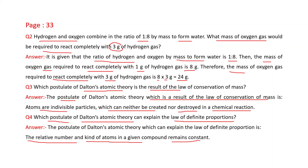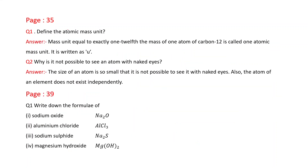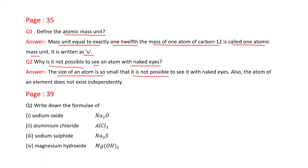Next question: Define atomic mass unit. A mass unit equal to exactly one-twelfth the mass of one atom of carbon-12 is called one atomic mass unit, written as 'u'. Why is it not possible to see an atom with naked eyes? The size of an atom is so small that it is not possible to see it with naked eyes. Also, atoms of an element do not exist independently.